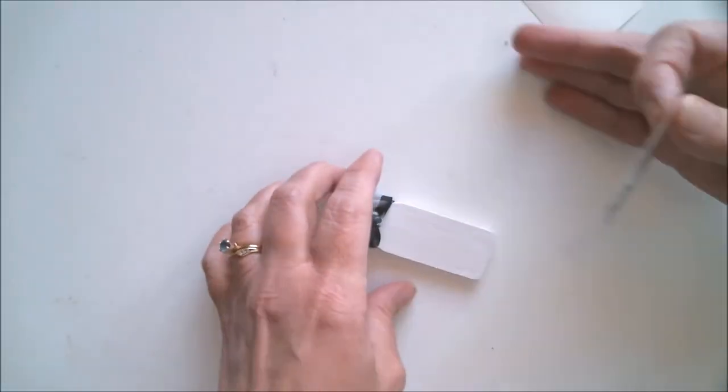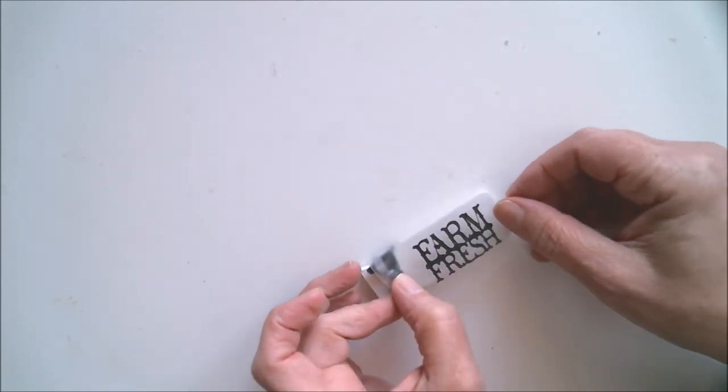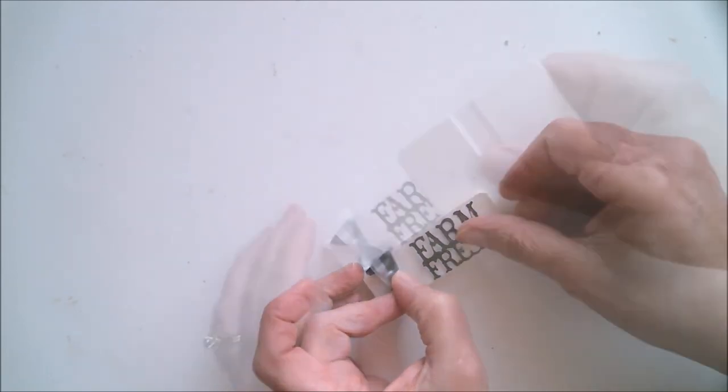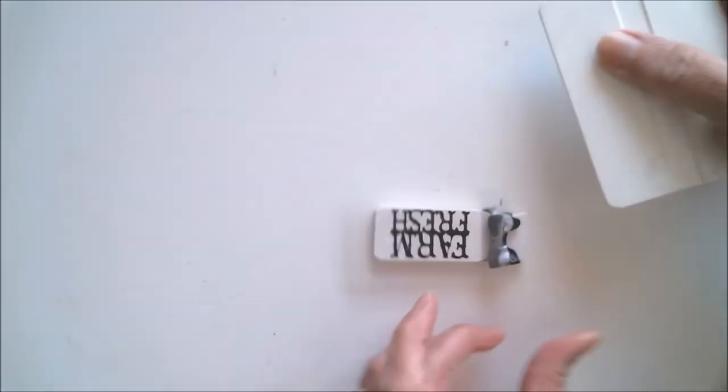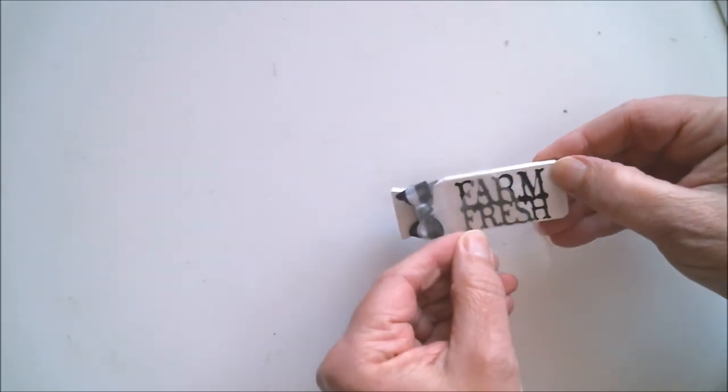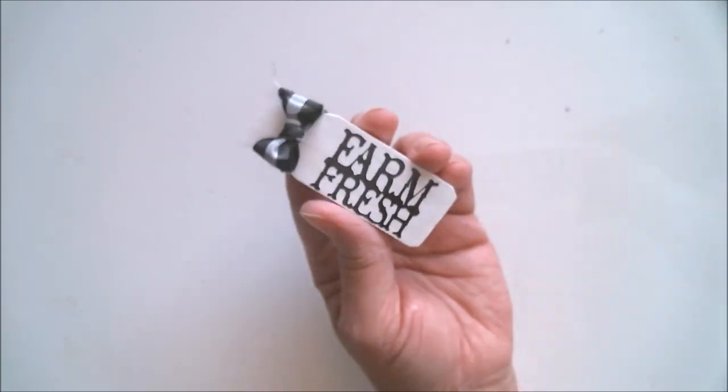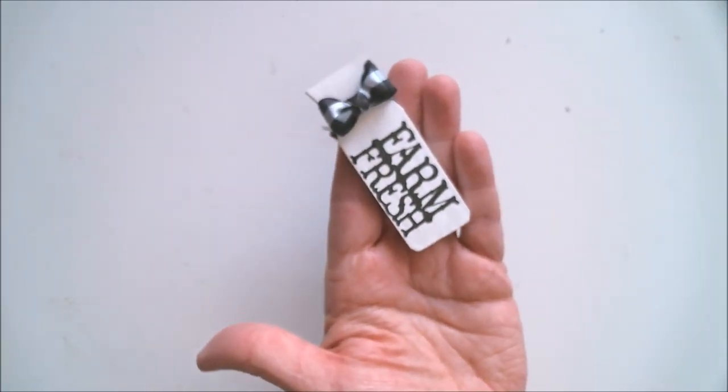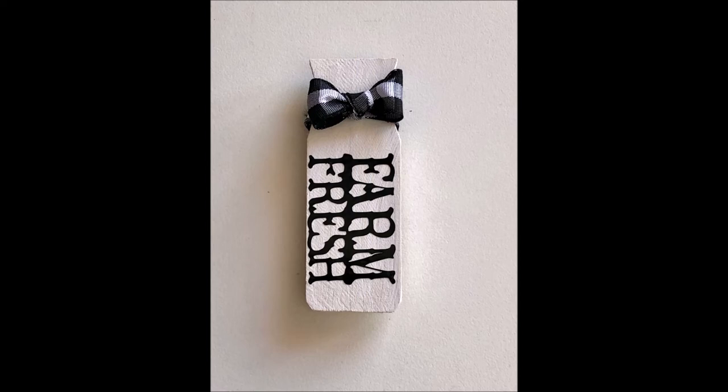Okay, for this last one, I cut out this Farm Fresh vinyl sticker using my Cricut and the Country Life cartridge. Of course, if you don't have a Cricut, you can use any stickers you have. And I think that the black and white checkered bow looks perfect with that. What do you think? I think this is going to look perfect on my refrigerator.